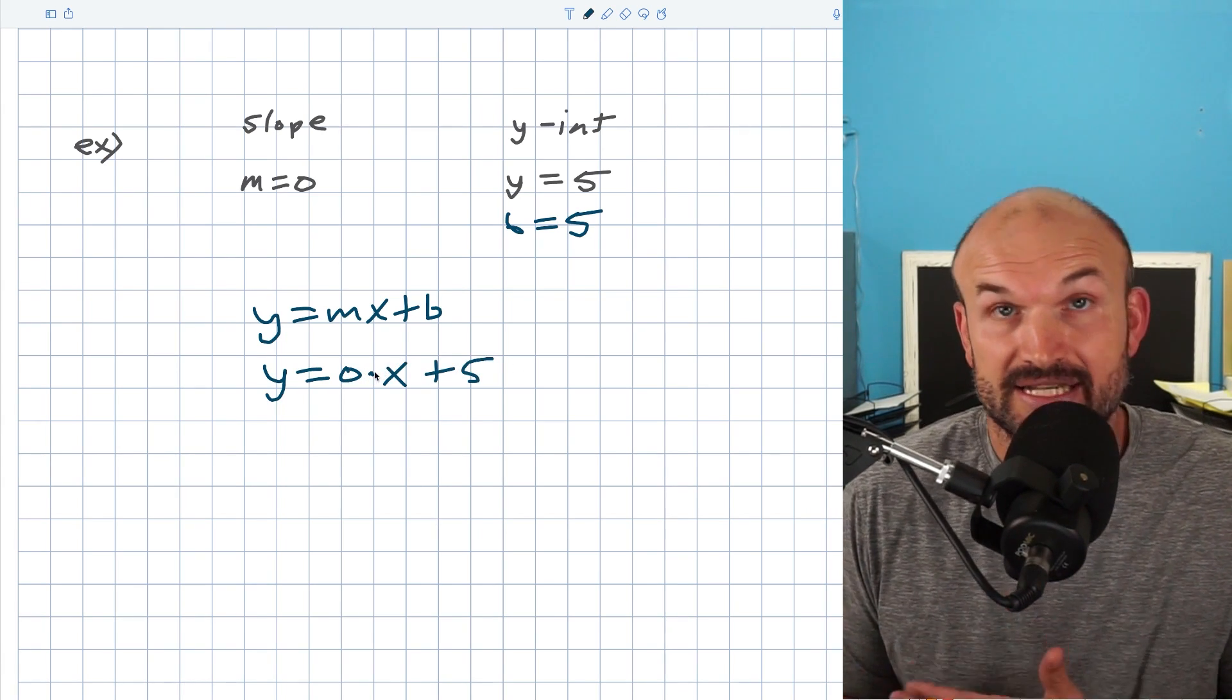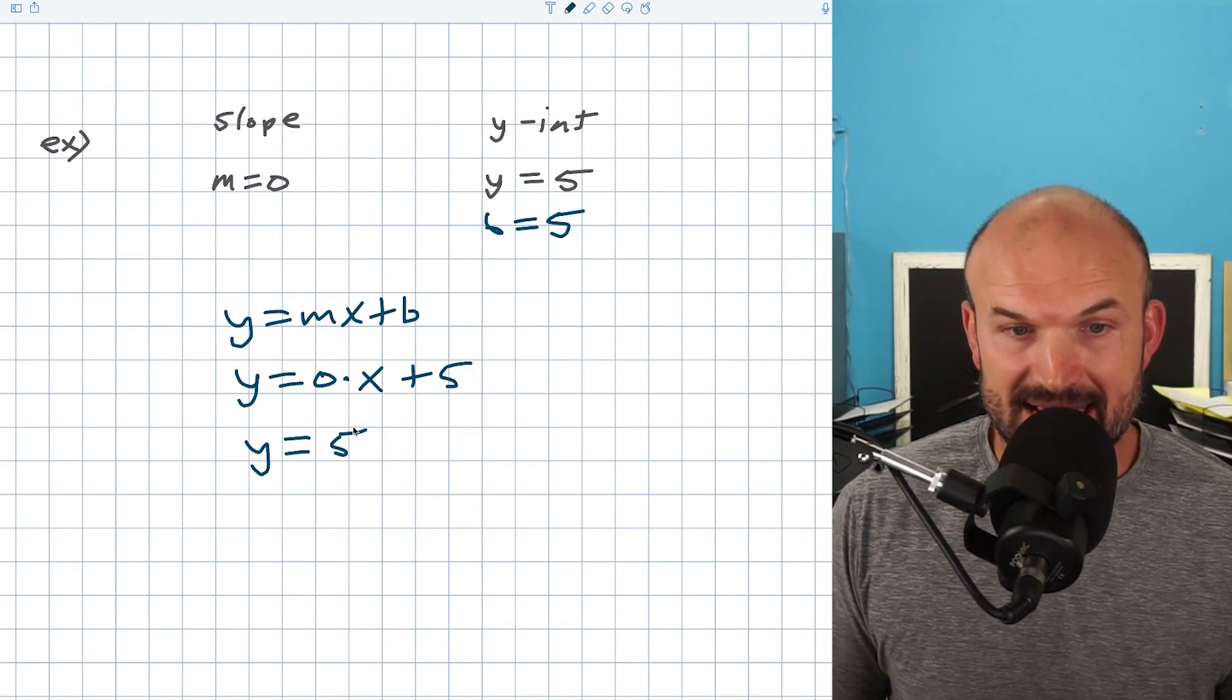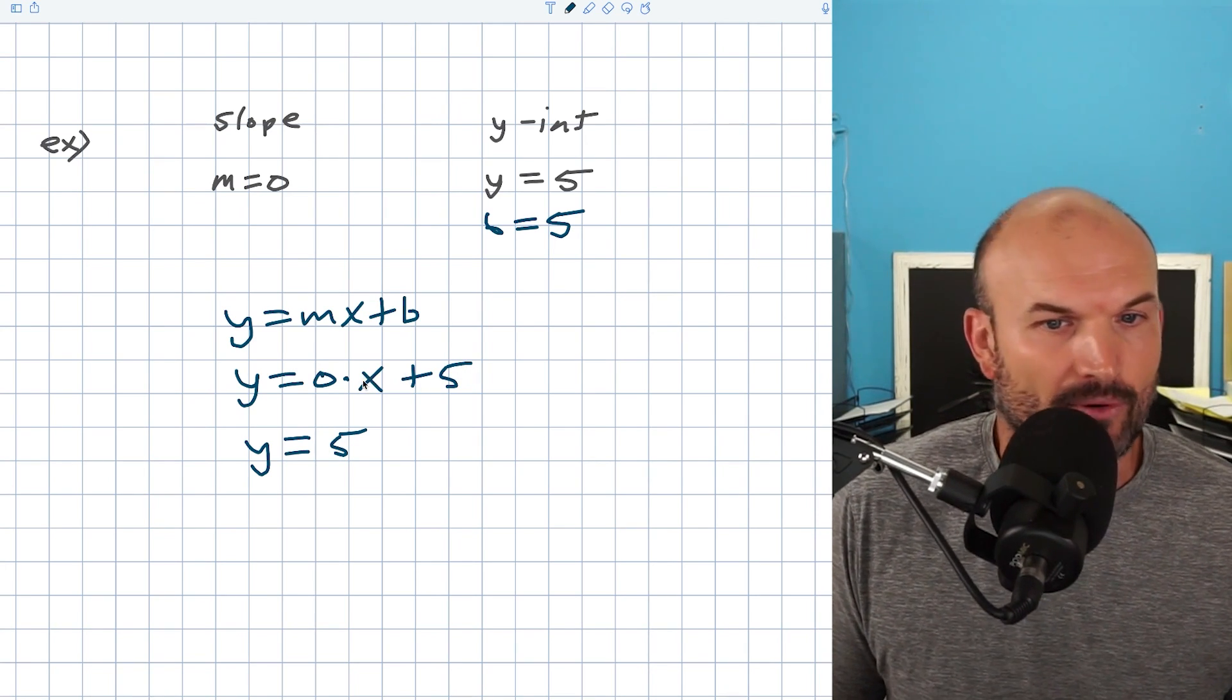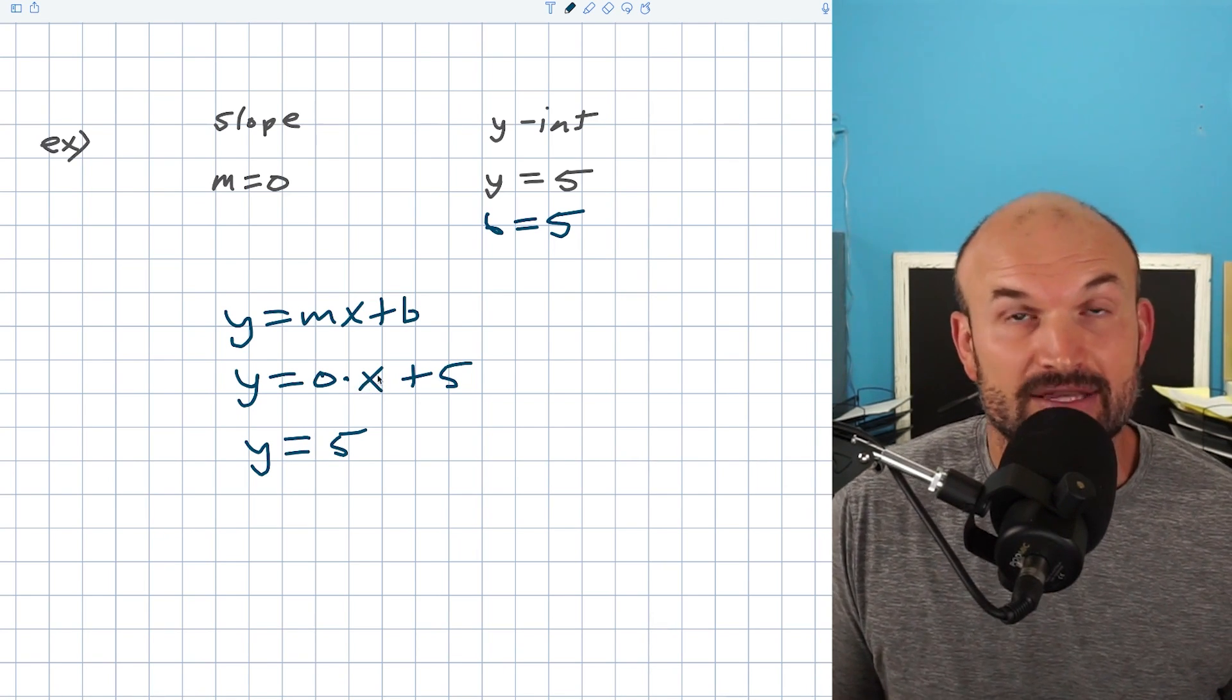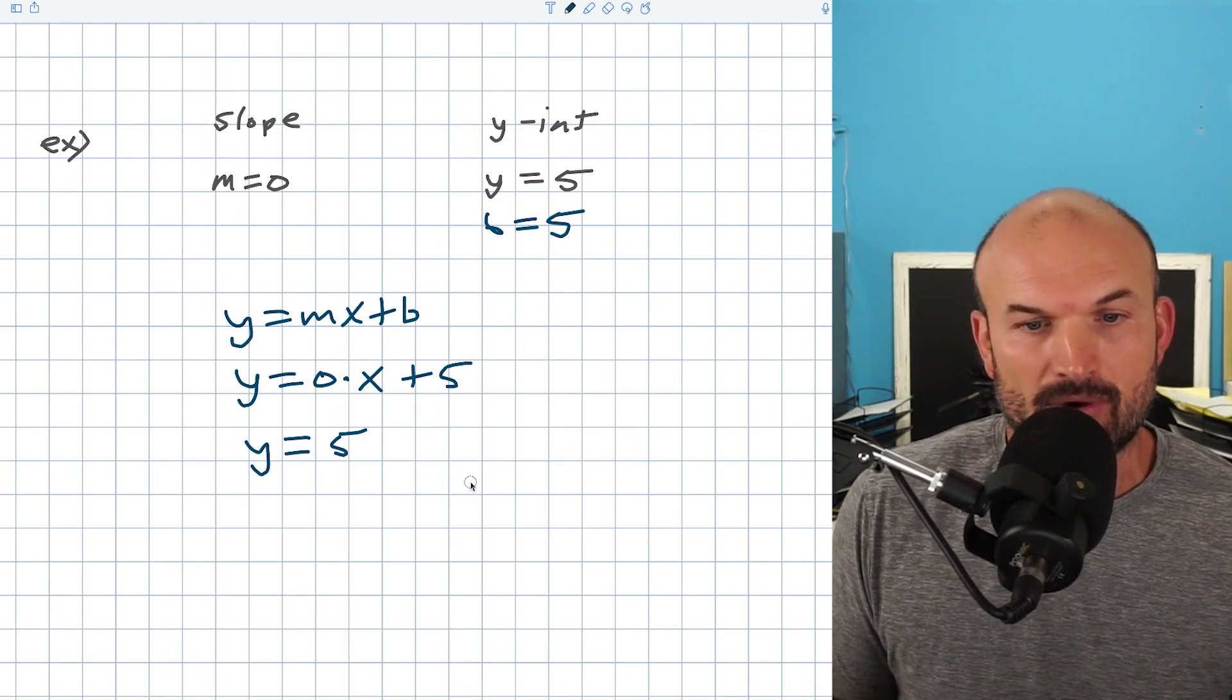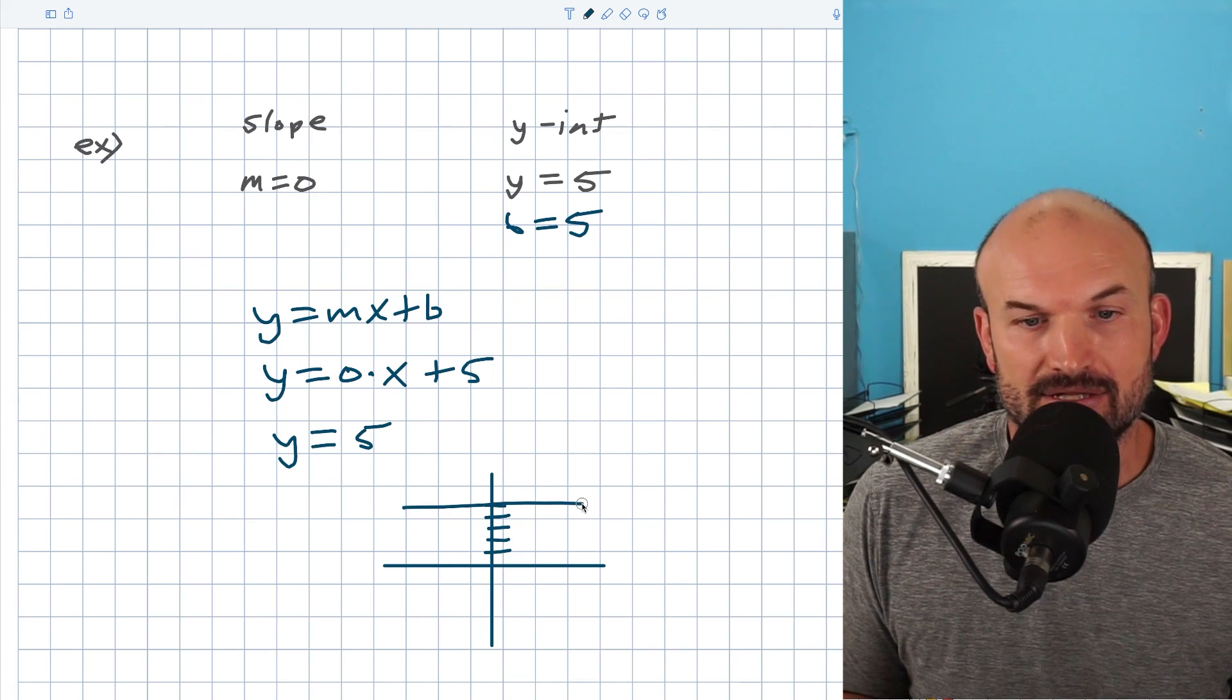Okay, but now remember, anything times 0, right, is going to be 0. So this is just going to give me y is equal to 5. But I want you to understand something, that y is always equal to 5, no matter what the value of x is. So like if I plug in a coordinate point, you know, x equals 4 or x equals 3, like, and I want to define the y value, it's always going to equal 5. And I want to show you this graphically because I want you to understand what's happening here when we have a slope that's going to be 0.